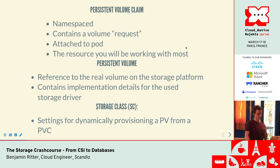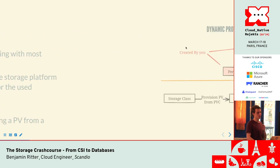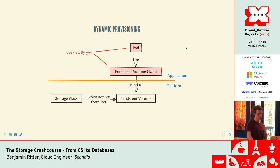Of those, you will mostly interact with persistent volume claims. Basically, the role here is: you request some sort of storage, you specify a rough outline — like how much storage you want and from what storage class — and then things happen and you get that storage. If you specify a storage class, it even happens automatically. This is called dynamic provisioning, where you create a persistent volume claim, specify a storage class, and then things happen and you get a persistent volume.